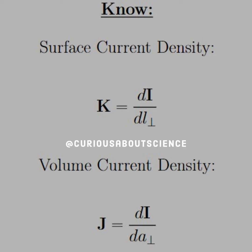Things to note for this problem: the surface current density is defined as K equals the rate of change of the current with respect to the perpendicular component of the line that it's traveling on.